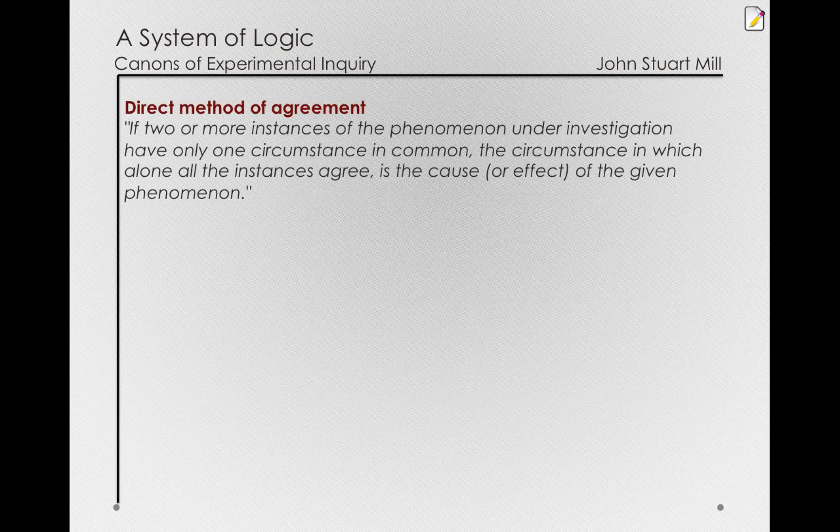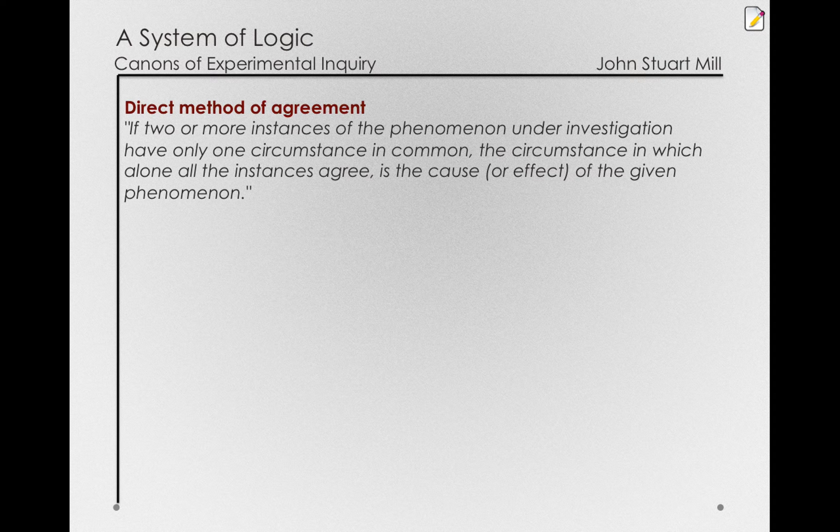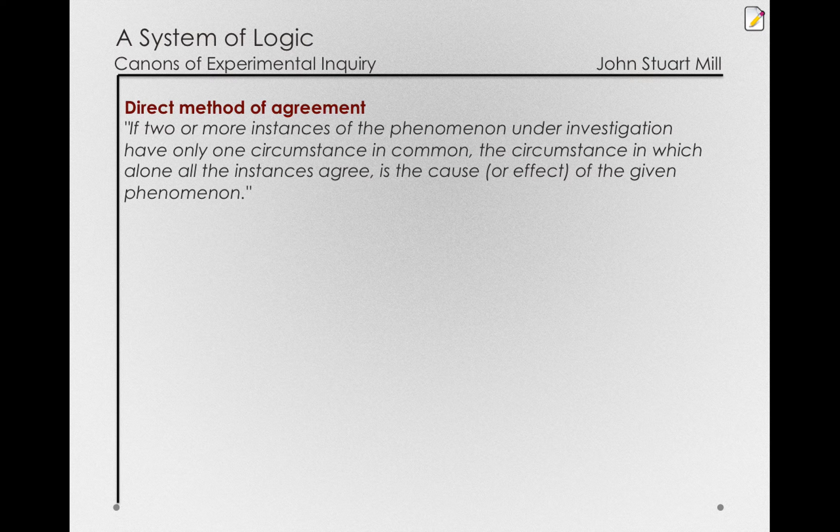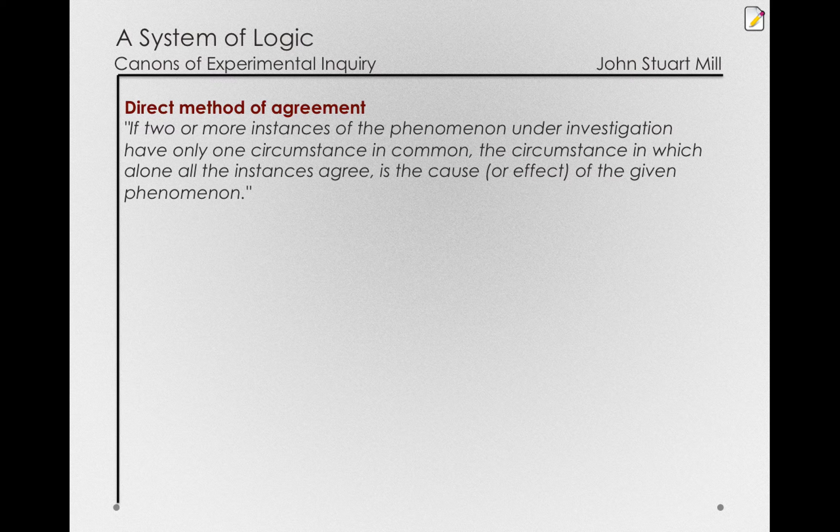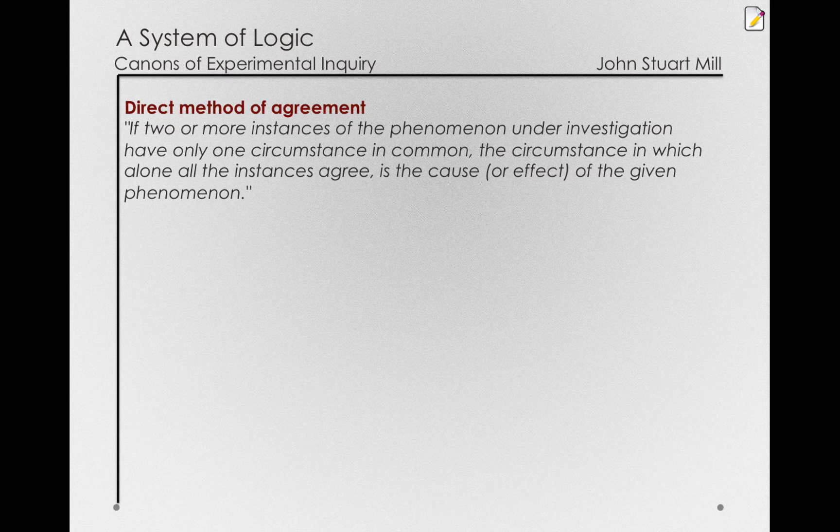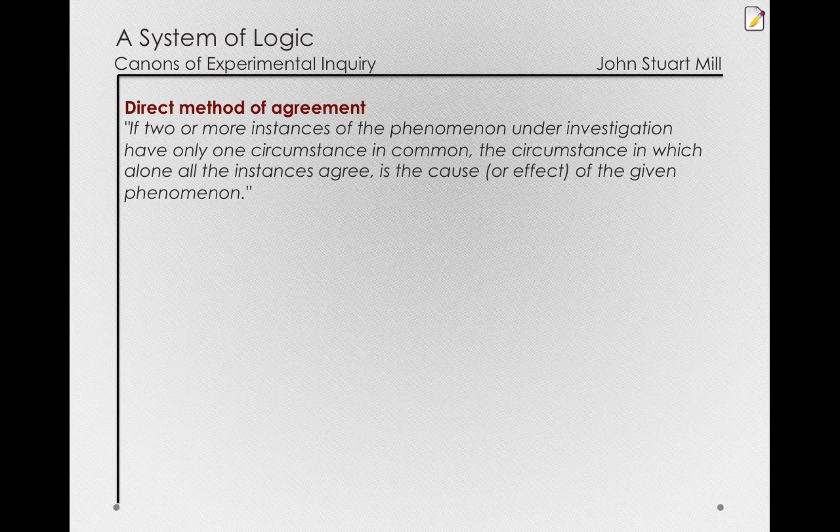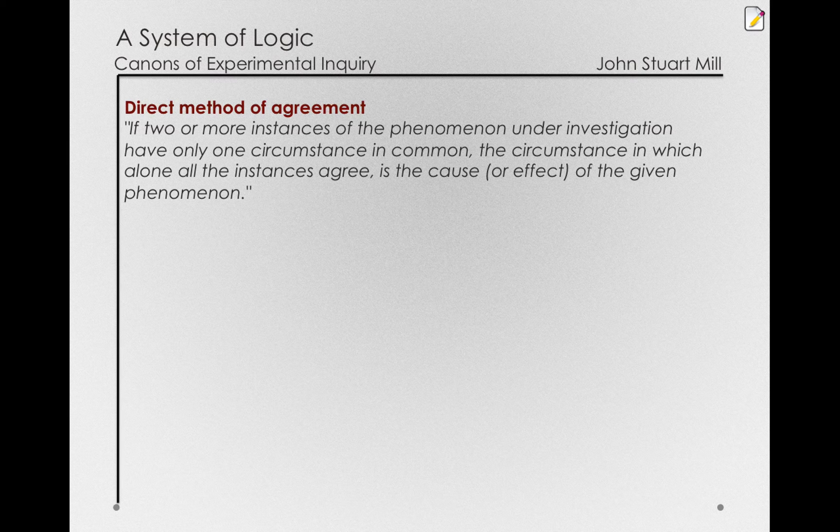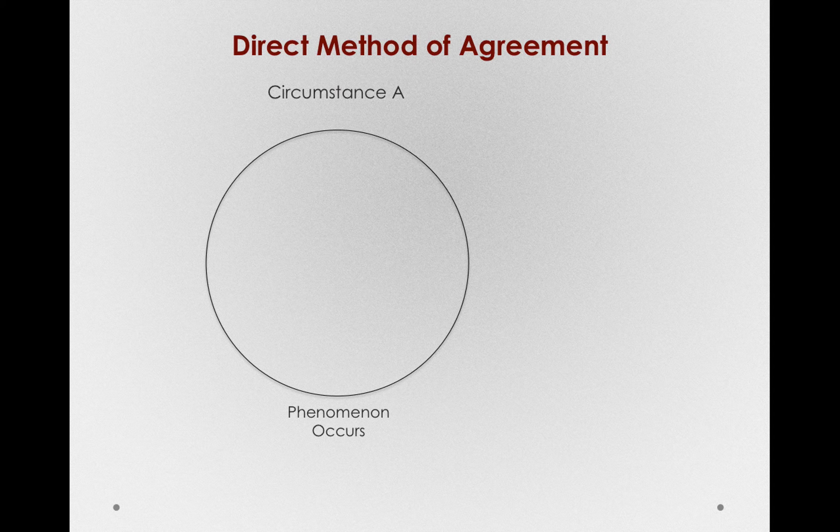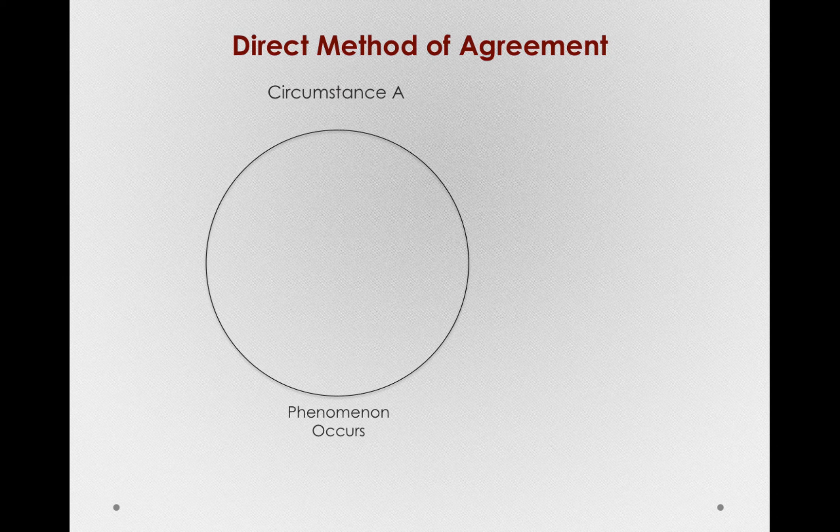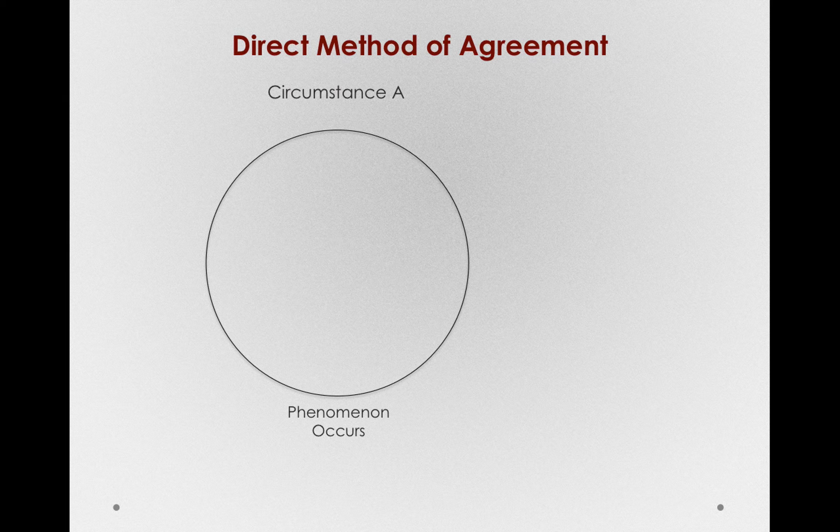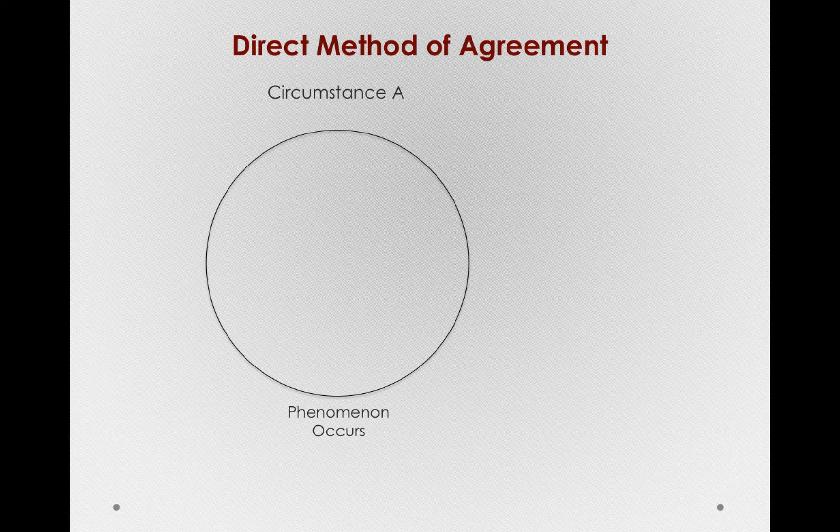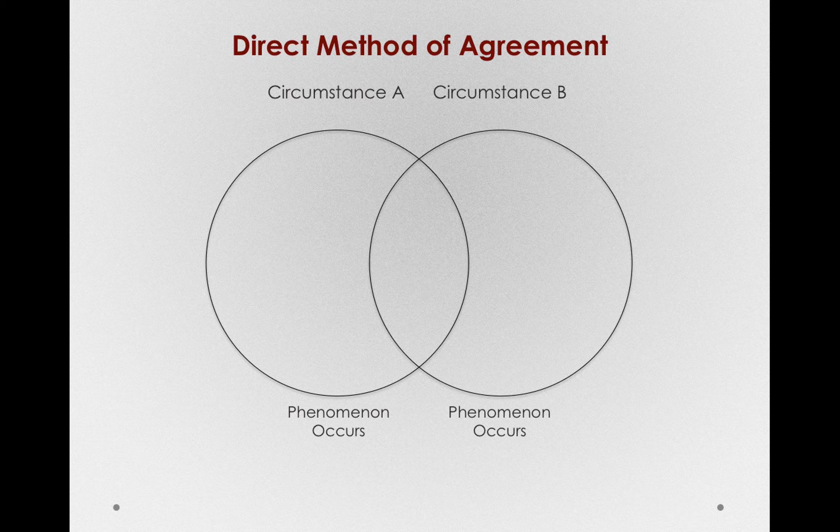First, the direct method of agreement states that if two or more instances of the phenomenon under investigation have only one circumstance in common, the circumstance in which alone all the instances agree is the cause or effect of the given phenomenon. This is 19th century British philosophy writing, so that may be a little impenetrable, but let's actually lay this out diagrammatically, and it should be a little more clear. So, here's the direct method of agreement in a diagram. Suppose we have circumstance A where some phenomenon occurs. I like to use a chemistry example in this one. Imagine the phenomenon occurring is some liquid turning blue when we add different things to a mixture. In circumstance A, the liquid turns blue, and also in circumstance B, the liquid turns blue.